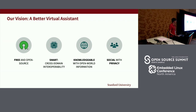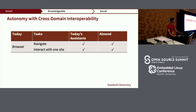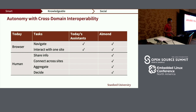Let me explain what I mean by autonomy with cross-domain interoperability. Today's virtual assistants are like a browser — they let you navigate and interact with one site at a time. But humans need to do more: share information, connect across sites, aggregate, and decide. And Almond supports the human in all these tasks.